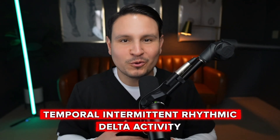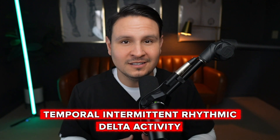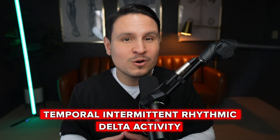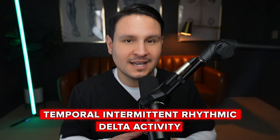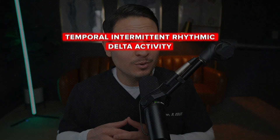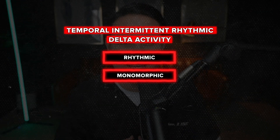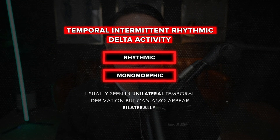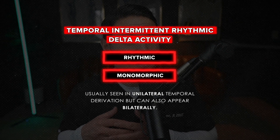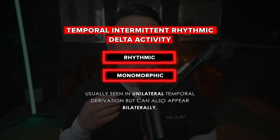Temporal Intermittent Rhythmic Delta Activity, or TIRDA, is a form of intermittent focal delta activity that is both rhythmic and monomorphic. It is typically seen in a unilateral temporal derivation, though it can occasionally appear bilaterally.